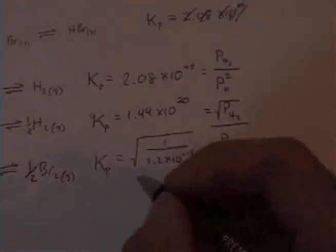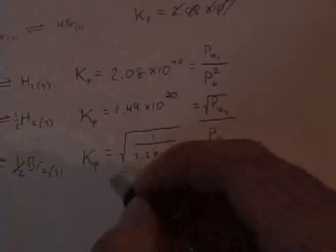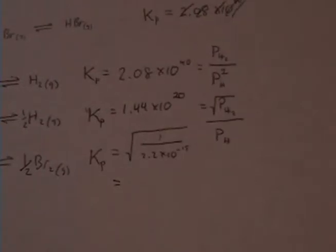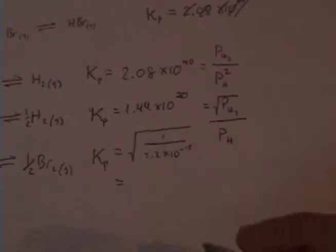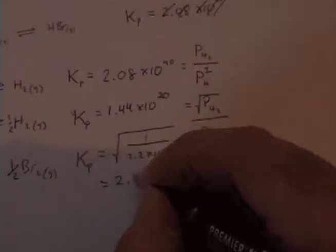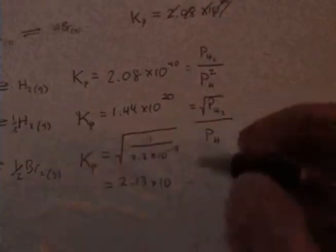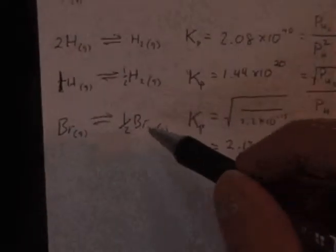And so what this ends up being is the square root of 1 divided by 2.2e to the minus 15. And I get 2.13 times 10 to the 7th. So that's my K for the second equation.